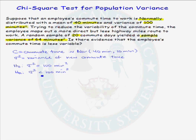Why was the one-sided alternative chosen? It was chosen because we were interested in knowing if there was evidence that the employee's commute time is less variable. Therefore, we have the one-sided alternative.